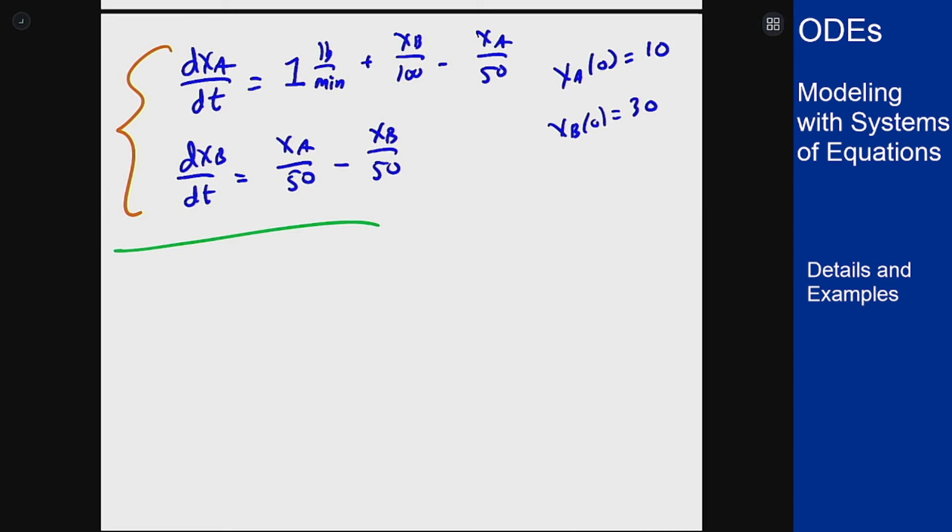For that I want these to both be zero. This equation here tells that XA must equal XB based on that set since it must be zero. Plugging this into the top equation here means these two will then simplify to be a negative XA over 100, which tells me that 1 minus XA/100 equals 0. So XA and XB are both 100. If I look now at the Jacobian matrix for this, this equation is almost linear.